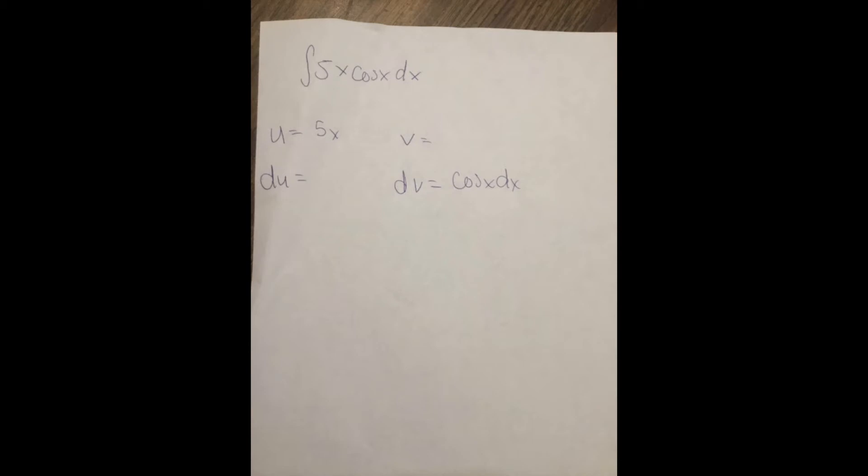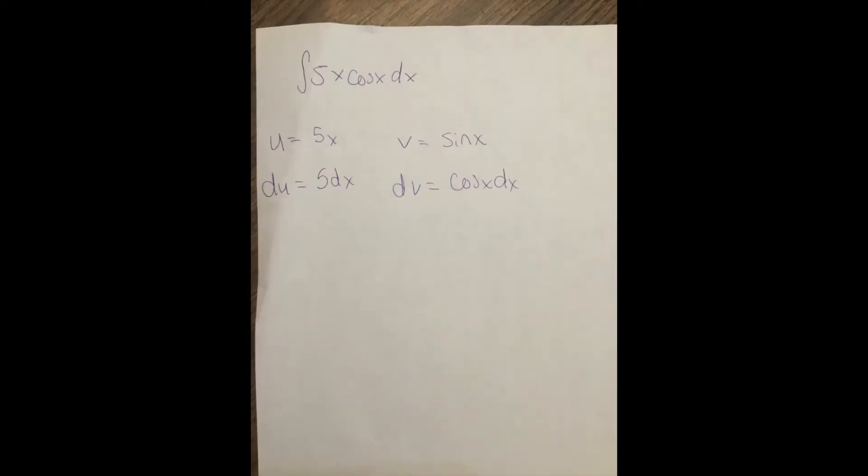So we're going to find du and v, which means we're going to do the derivative of u, and then we're going to do the antiderivative of dv. So the derivative of u is 5 dx, and then the antiderivative of cosine x dx is sine x.